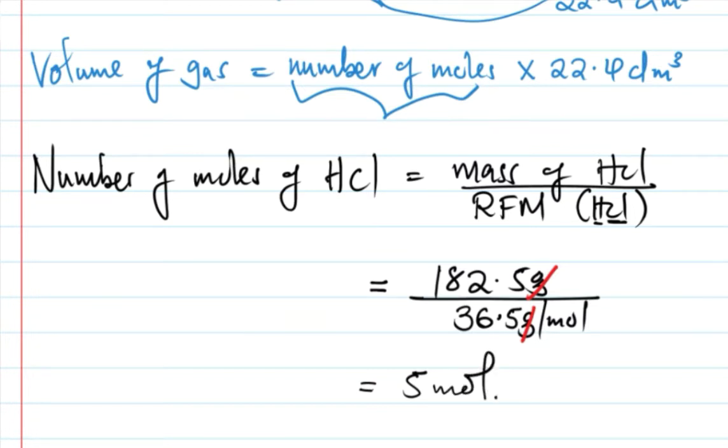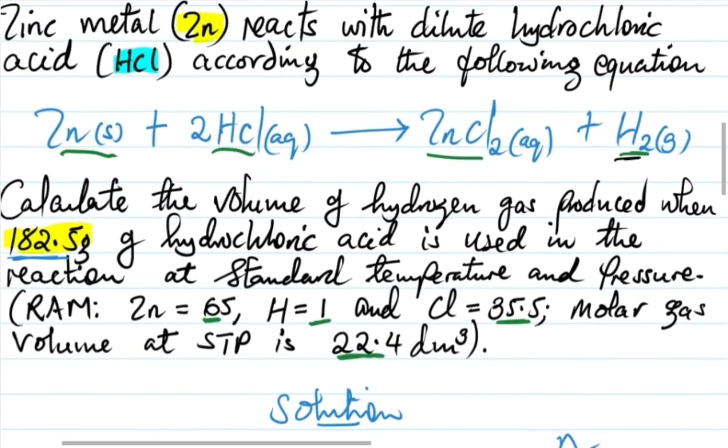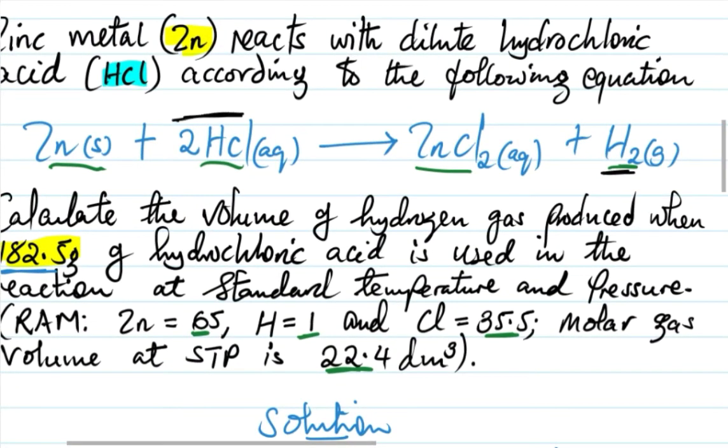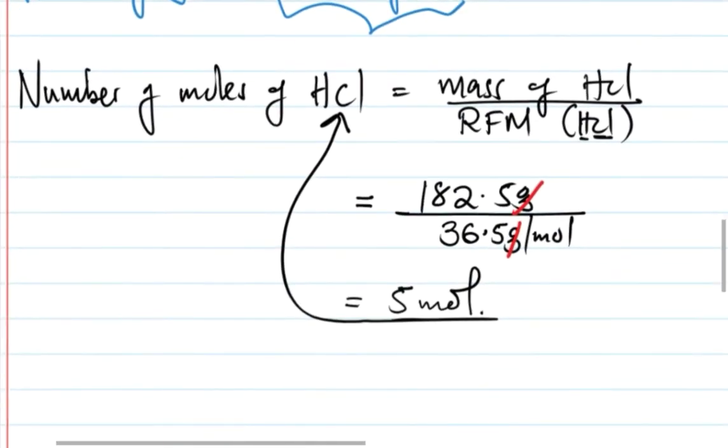Next step, we need to convert these moles of HCl to moles of hydrogen. In every 2 moles of hydrochloric acid, you get 1 mole of hydrogen gas.